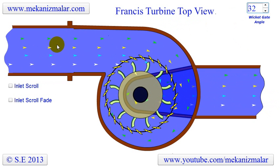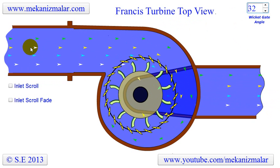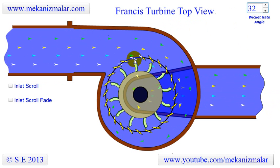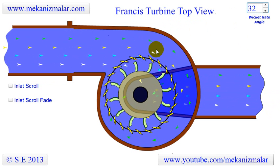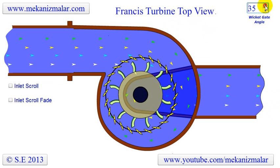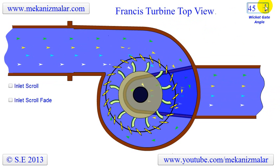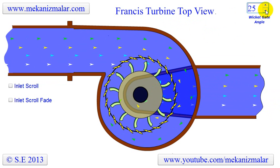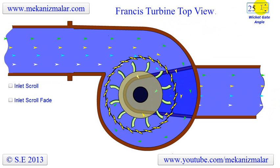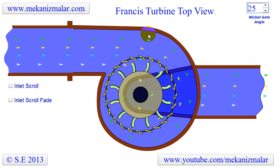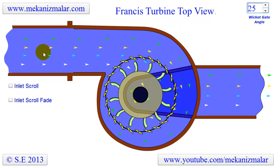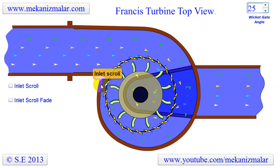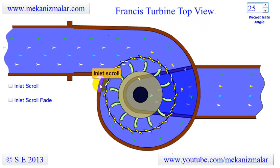This animation shows the top view of a Francis turbine. The arrows show the water path inside the turbine, and the flow rate of the water is shown by the speed of the arrows. The water coming from the penstock is transferred to the inlet scroll, which distributes the water equally around the runner.